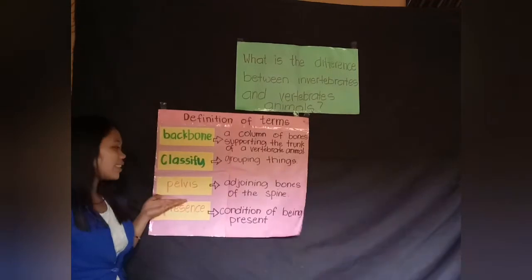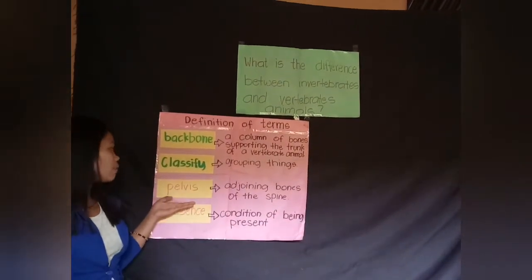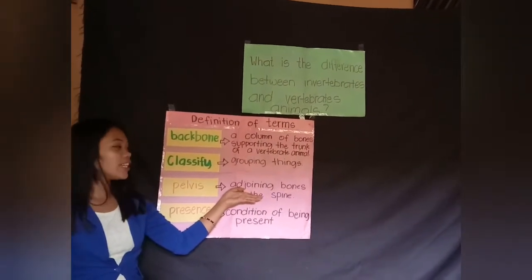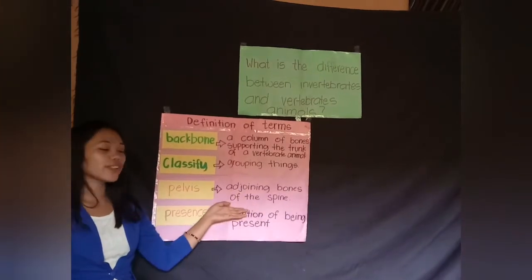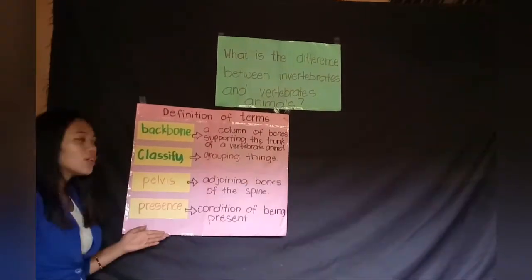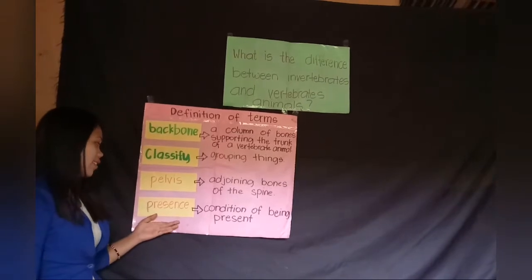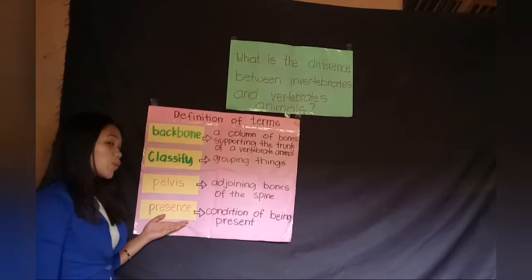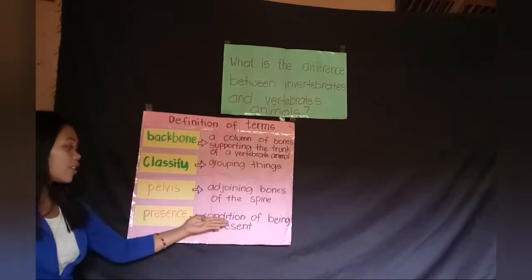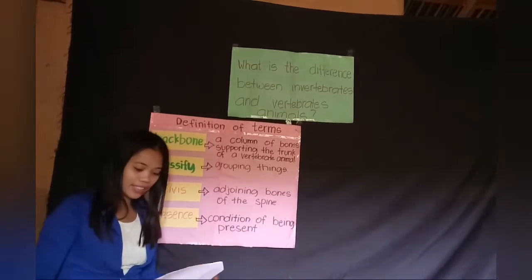The third word is pelvis. What is the meaning of pelvis? Adjoining bones of the spine. The last word is presence. What is the meaning of presence? Condition of being present.